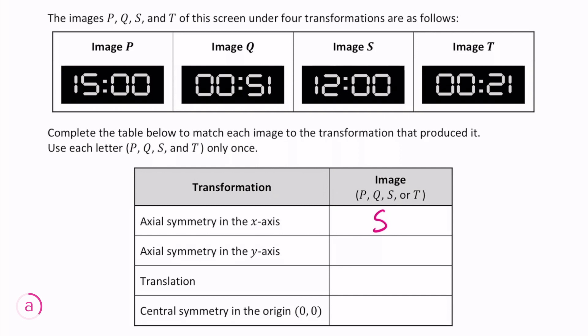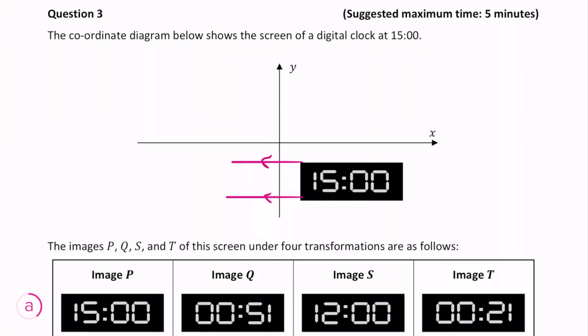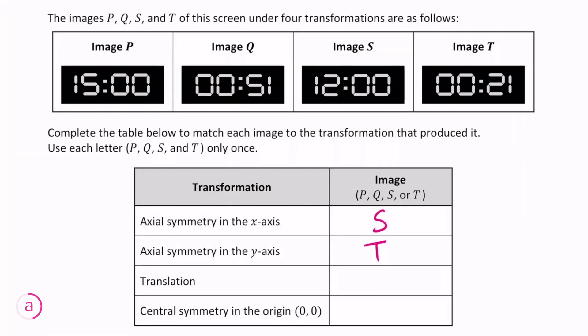The next transformation is axial symmetry in the y-axis. This is the same deal as the first one except this time it's flipped horizontally so the image will be backwards. Looking at our four images, this corresponds to image T as it's flipped backwards.